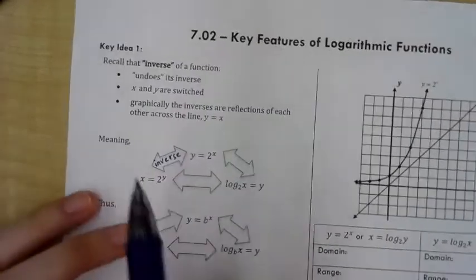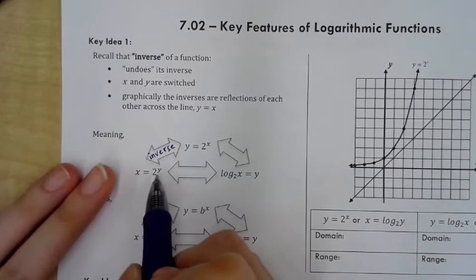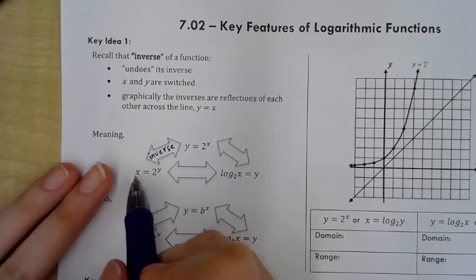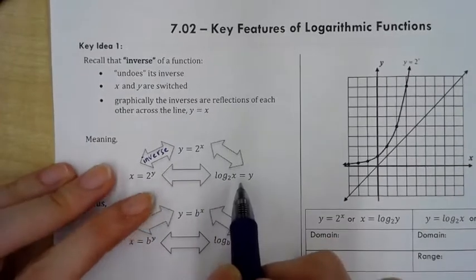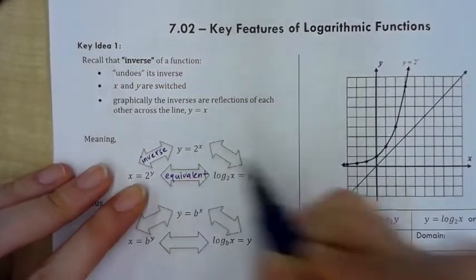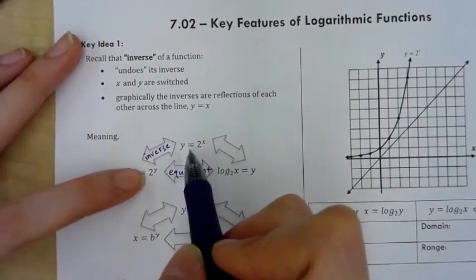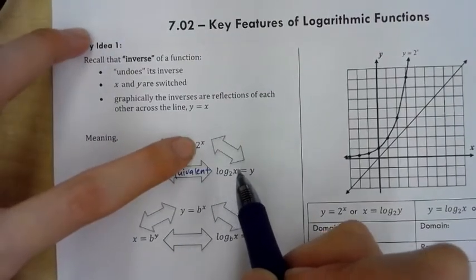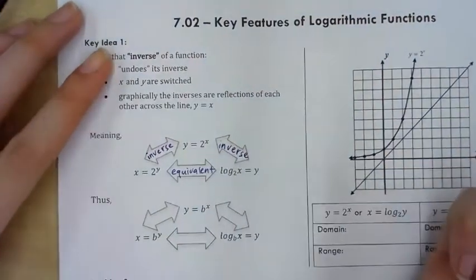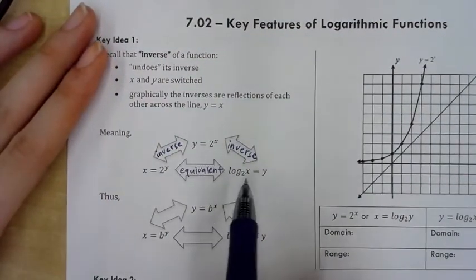In order to isolate the exponent, remember we can rewrite this into log form. So it's going to be log base 2 of x equals y. These two are equivalent forms of each other. And since these two are equivalent and the original forms are inverses, we can say that an exponential function's inverse is a log function.